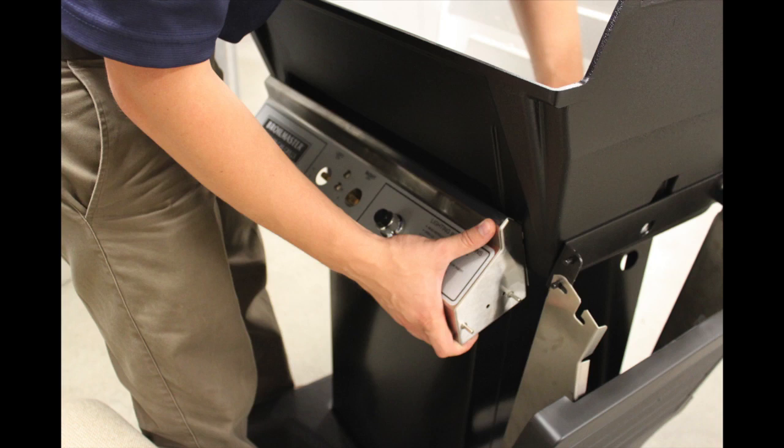On LP grills, the hose and regulator needs to hang down on the inside of the cart. Attach the control panel with the two locking nuts.